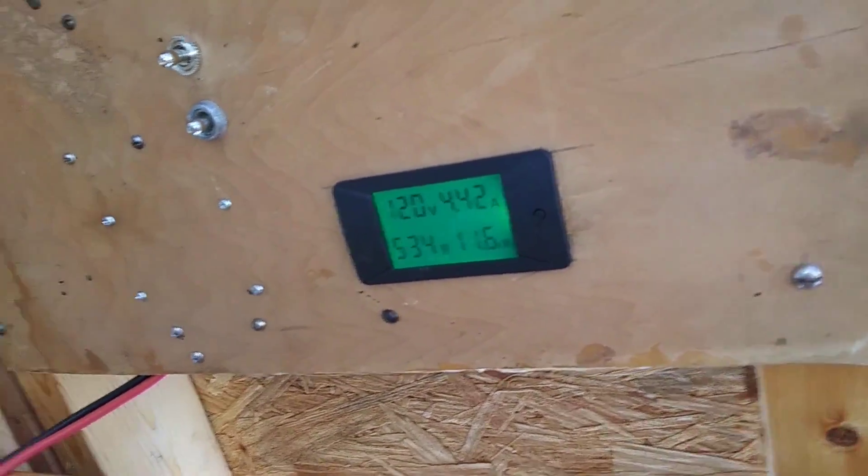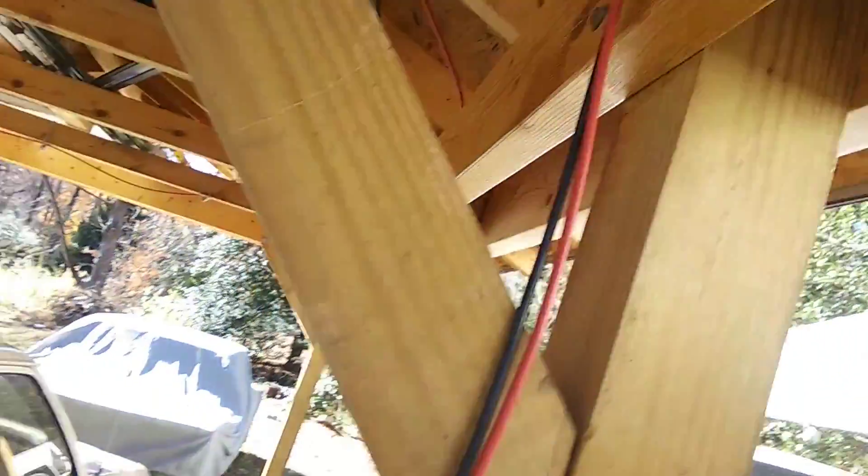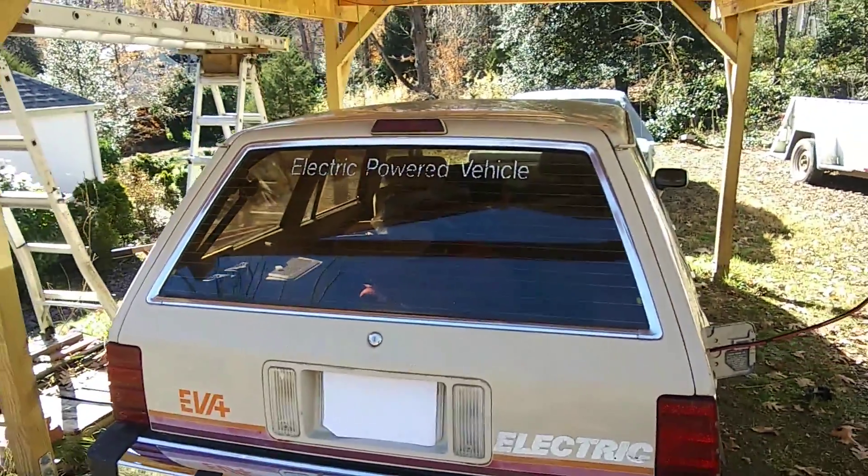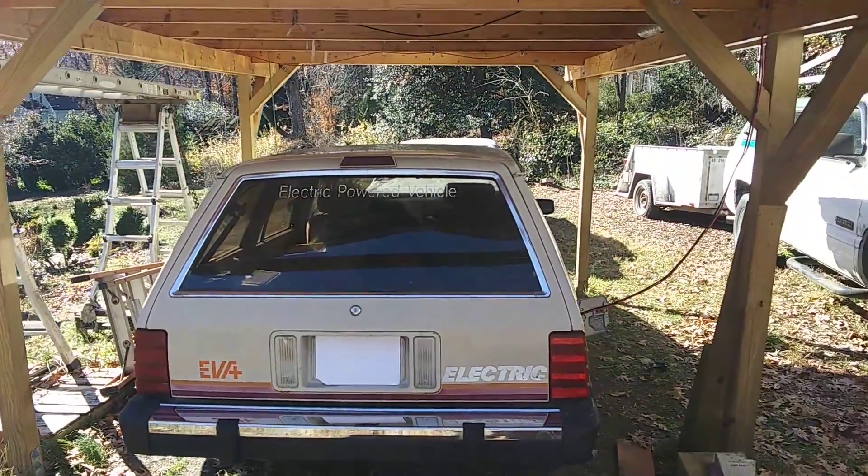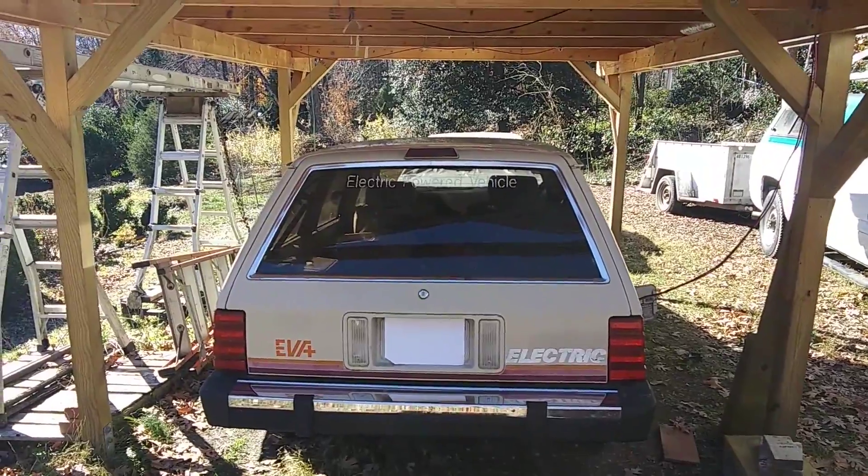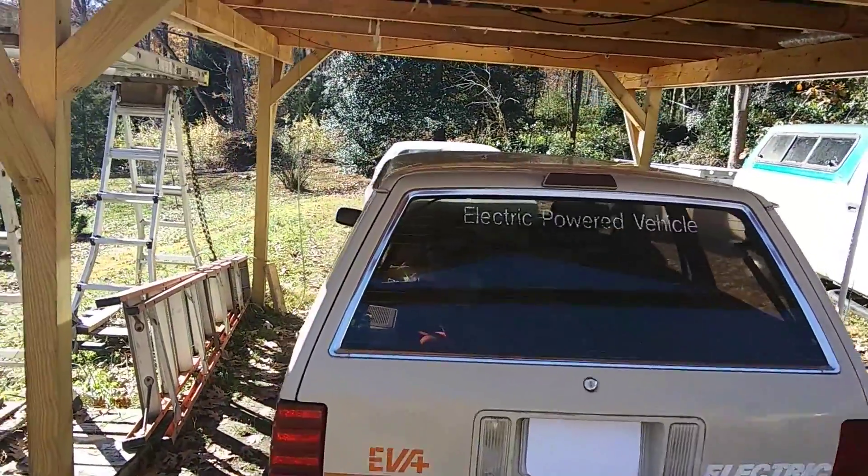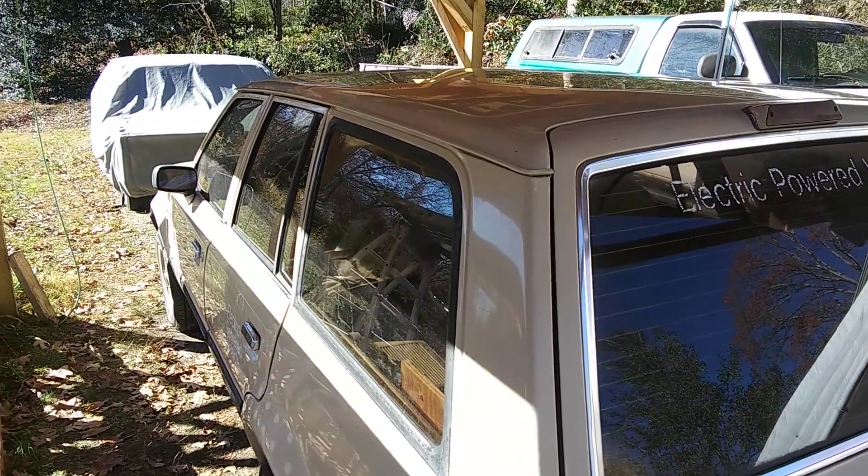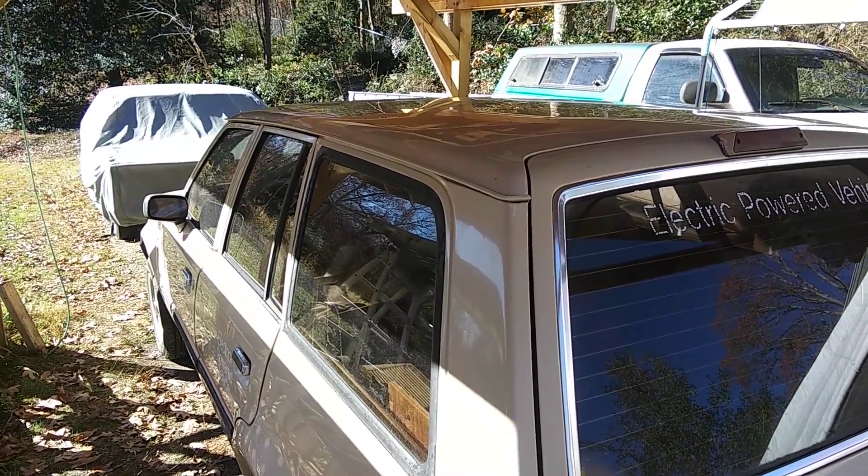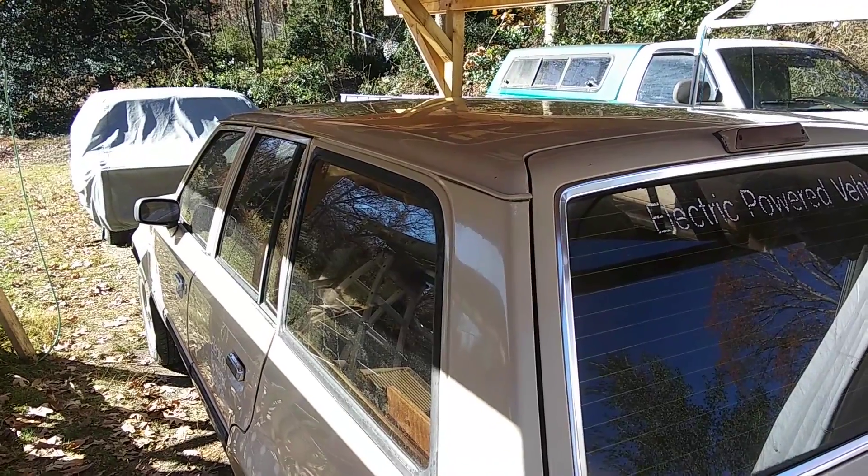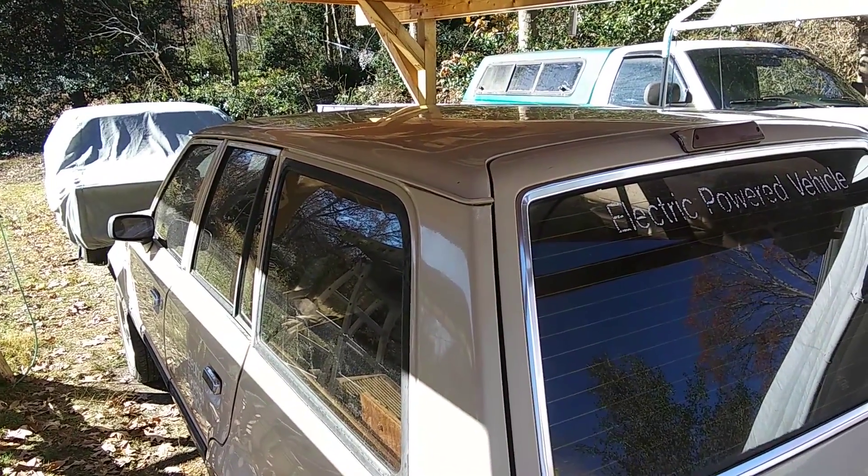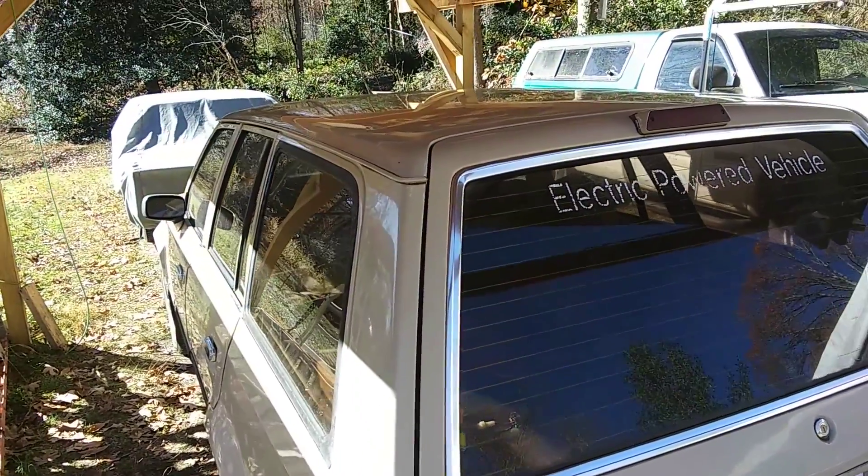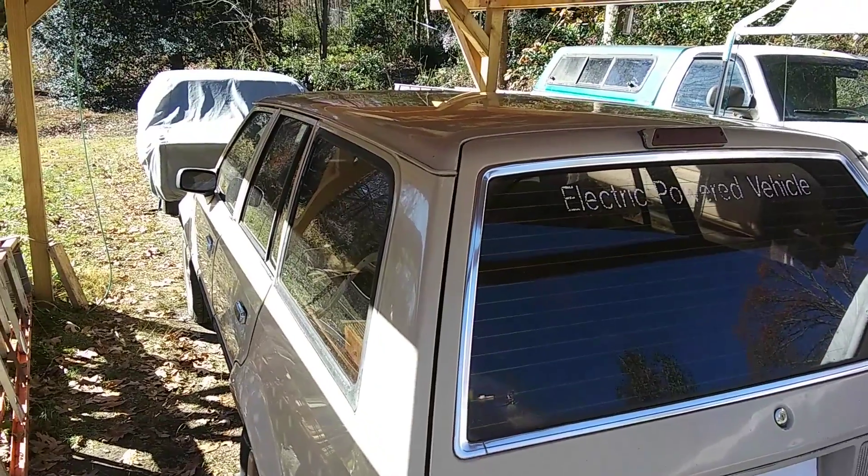Now this is kind of an unusual EV. It's a Solectria EV Court built in 1988. It has a DC sepex motor that runs at about 120 volts DC, which is about one third voltage of your average modern EV. So I wouldn't recommend you try this direct charging with your 400 volt Tesla, but for these lower voltage conversion EVs it works quite well.